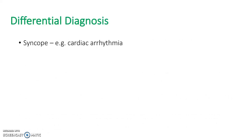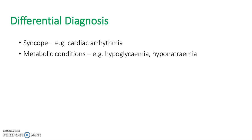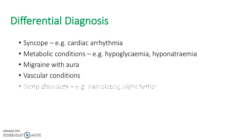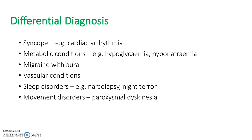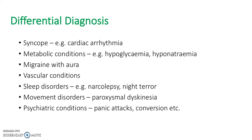What else could it be? It could be syncope from a cardiac arrhythmia, which is why we do an ECG. It could be a metabolic condition, since things like hyperglycaemia can present with seizures. It could be a migraine with aura, a vascular condition, a sleep disorder such as narcolepsy, a movement disorder due to the motor symptoms, a psychiatric condition such as a panic attack, or a non-epileptic seizure.